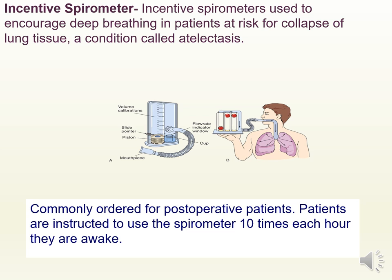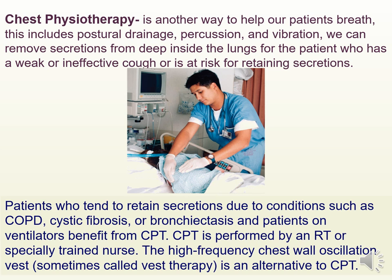Incentive spirometers encourage deep breathing in patients at risk for collapse of lung tissue or atelectasis. They are commonly ordered for post-op patients and patients are instructed to use them 10 times each hour while awake. Chest physiotherapy (CPT) can also help patients breathe by providing postural drainage, percussion, and vibration to move secretions from deep inside the lungs. This is beneficial for patients with a weak or ineffective cough or at risk for retaining secretions — including those with COPD, cystic fibrosis, bronchiectasis, or patients on ventilators.